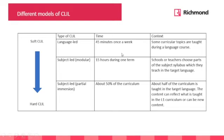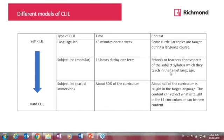The language-led approach is called soft CLIL. In this approach, language is the most important thing. If I have a lesson about nutrition, I am not going to assess my students on the nutrition content. My main objective in a soft CLIL language-led approach is that students practice the language by using the content. Then we have the other extreme: subject-led, where sometimes there is a 50/50 approach in the curriculum.